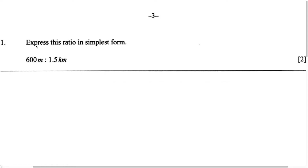This question says express this ratio in simplest form. They give us 600 meters to 1.5 kilometers, and they want us to express this ratio in its simplest form.